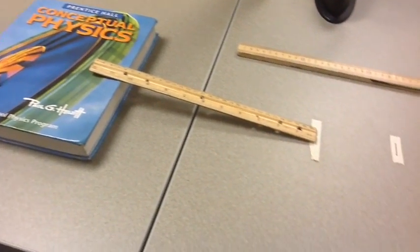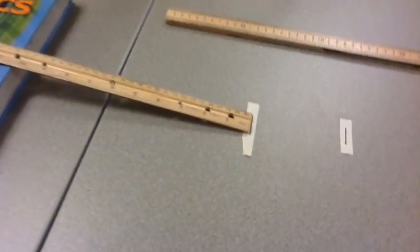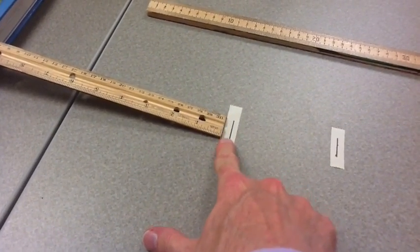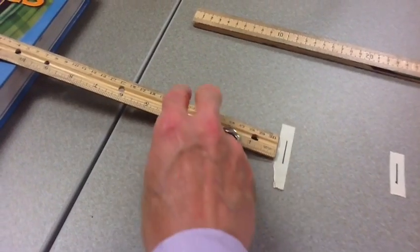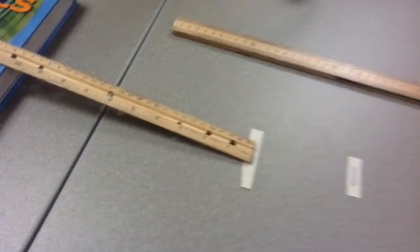Notice at the end of the ruler, you have a piece of tape that indicates with a line where the marble will come off the ruler. That way, if the ruler moves, you'll know where to put it back.